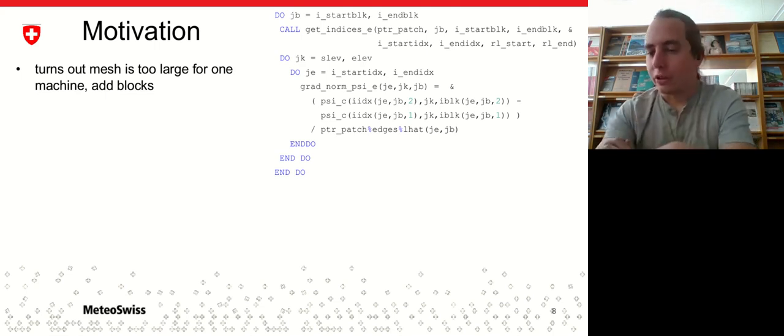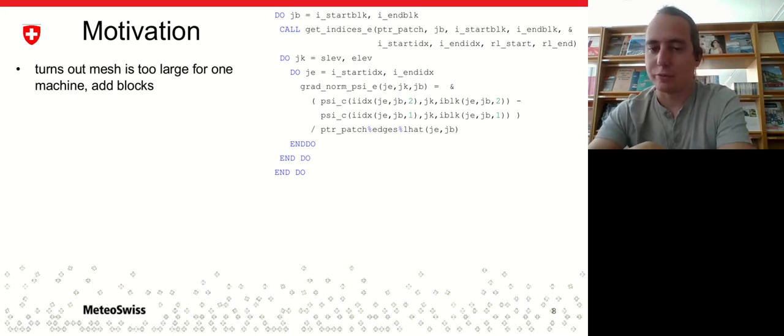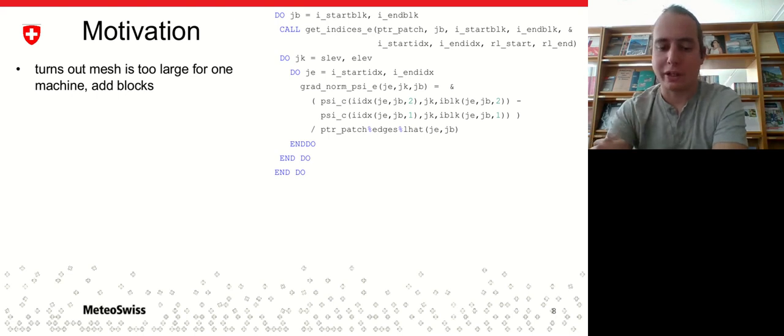Now, it turns out that the meshes in weather and climate, they are not just large, but they are huge. They have millions upon millions of elements. So your mesh might not fit in the memory of one of your nodes. So you need to do some kind of blocking. You just get another loop about the blocks. For each block, you need to get your indices. All you add is a third loop because it needs to loop all the blocks.